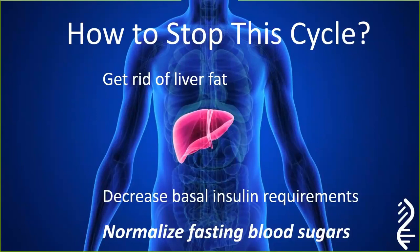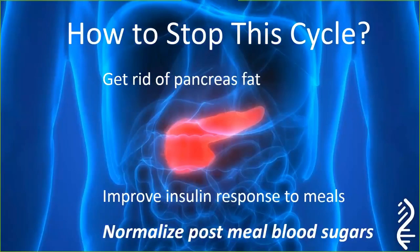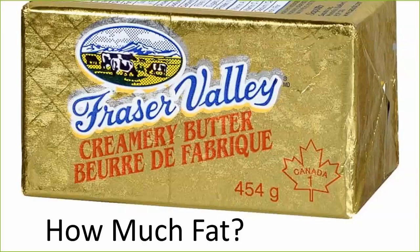So how do we stop this cycle? We get rid of the liver fat — and if we do that, we'll decrease the basal requirements and normalize our blood sugars. We get rid of the pancreas fat and we'll improve our insulin response to meals. When you do the MRI studies like Taylor did, there's only about 400 grams of fat in the liver to lose, and just a few grams of fat in the pancreas. If we had a magic wand and could remove that fat instantly, we could probably reverse diabetes just like that. Alas, we don't have a magic wand, so we have to do things differently.